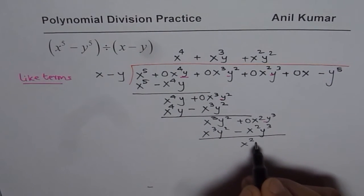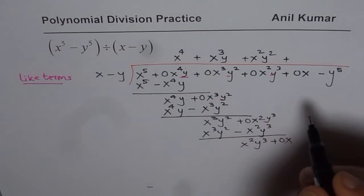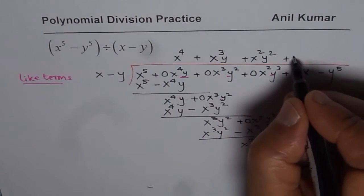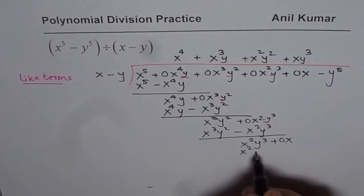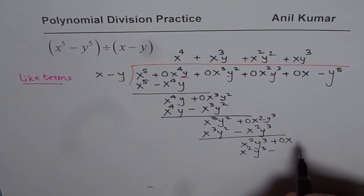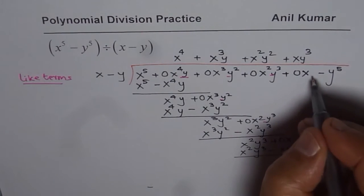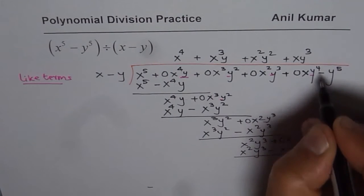If you've made a mistake you can always correct it, no problem. So we move on. We have now x square y cube, bring down that 0x, and again we need to multiply by xy cube. That gives us x square y cube minus xy to the power of 4. Now same correction - we have to get y to the power of 4.